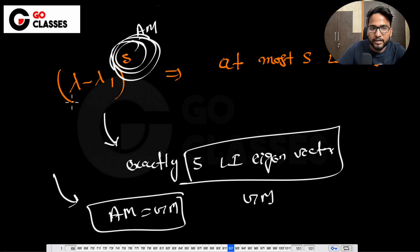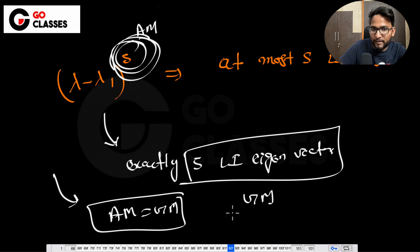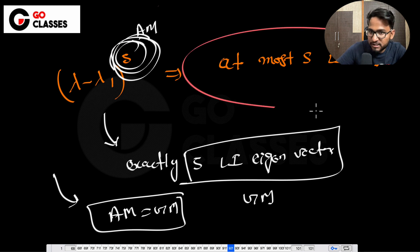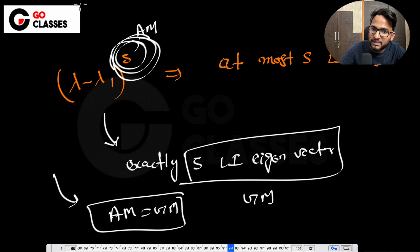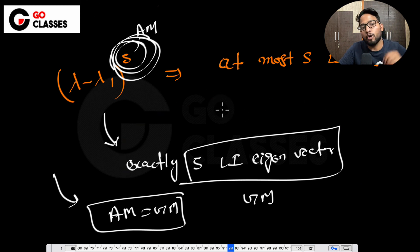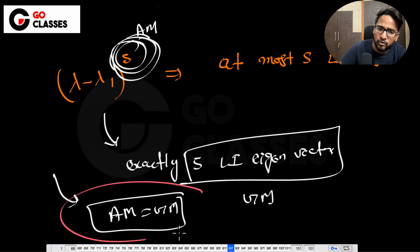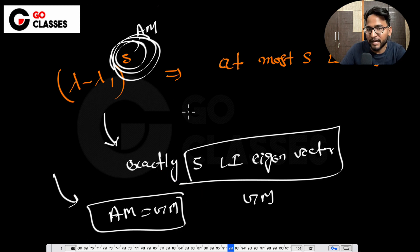If you have an equation where the power is 5, then you can have at most 5 linearly independent vectors. But what we want is exactly 5 linearly independent vectors, meaning what we see should actually be there. So if we see 5, we should have 5 linearly independent vectors — that means we want AM equal to GM.